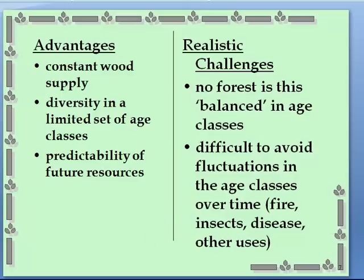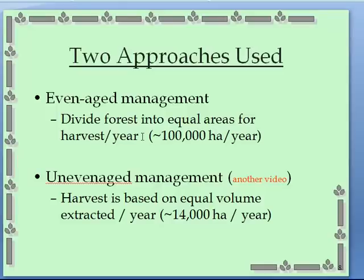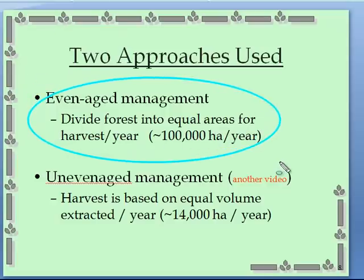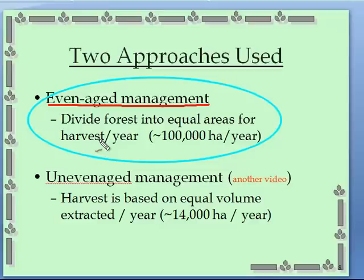There are two approaches for doing this. The one we're going to discuss is called even-aged management — you divide the forest or the same species type into equal areas for harvest per year. The next video will cover uneven-aged management.